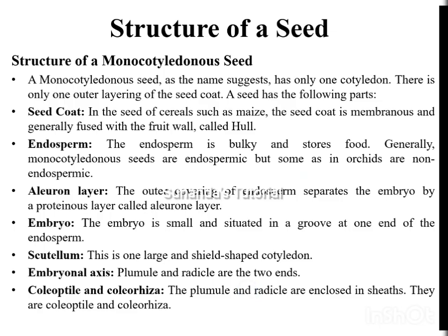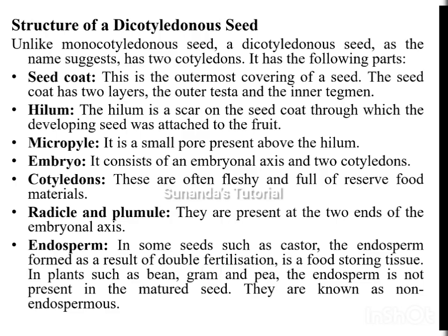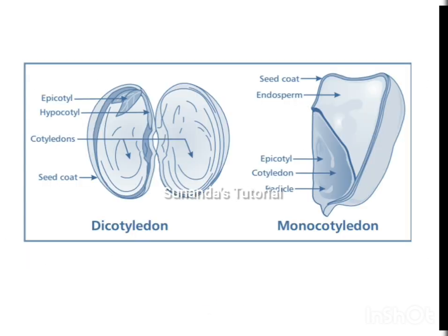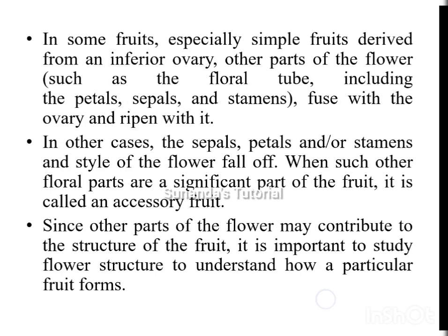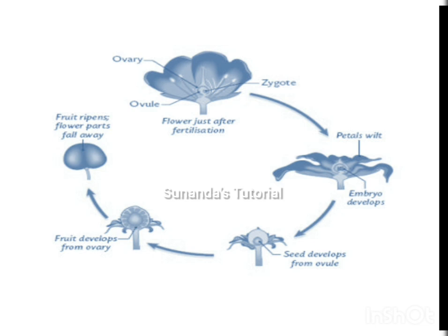The structure of a monocot seed includes a seed coat, endosperm, and an aleurone layer — the proteinaceous covering of the endosperm that separates it from the embryo. The embryo contains the scutellum, embryonal axis, coleoptile, and coleorhiza. A dicot seed has a seed coat, hilum, micropyle, embryo with cotyledons, radicle, and plumule, and sometimes endosperm. The fruit is the mature form of the ovary. This concludes the post-fertilization events occurring in angiospermic plants.